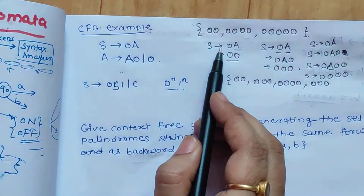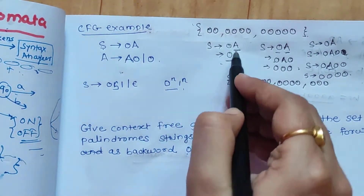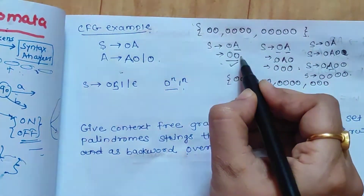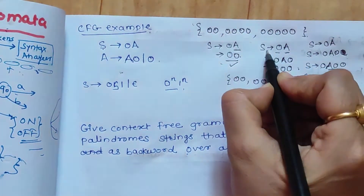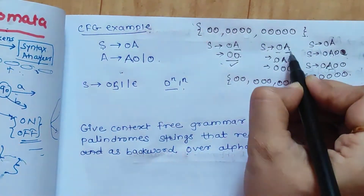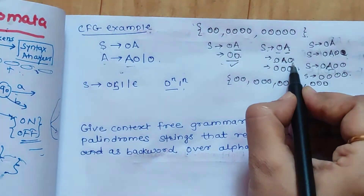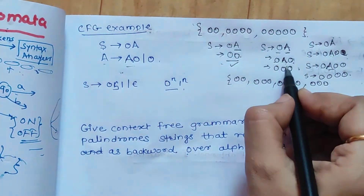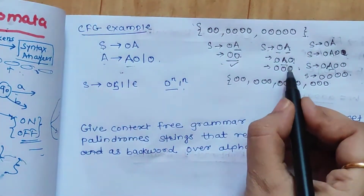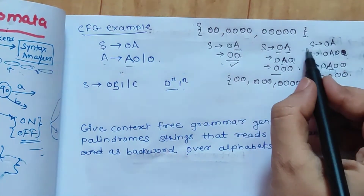Suppose initially S gives 0A. In the next stage, we can replace A with 0, so the string we get is 00. In another derivation, S gives 0A, then we replace A with A0 — since we have the rule A can be replaced with A0 — giving 0A0. In the next step, A is replaced with 0, giving the string 000.